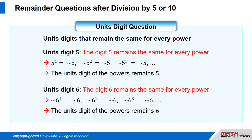Units digit 6: the digit 6 remains the same for every power. That is, 6 to the power of 1 equals 6, 6 to the power of 2 equals 6, and 6 to the power of 3 equals 6, and so on. Thus, the units digit of the powers remains 6.